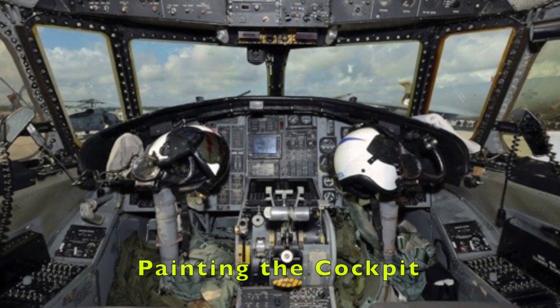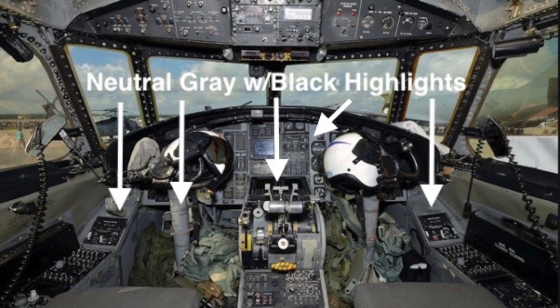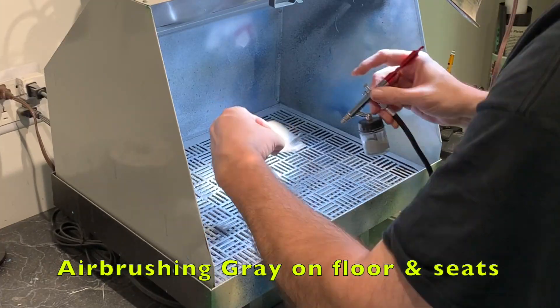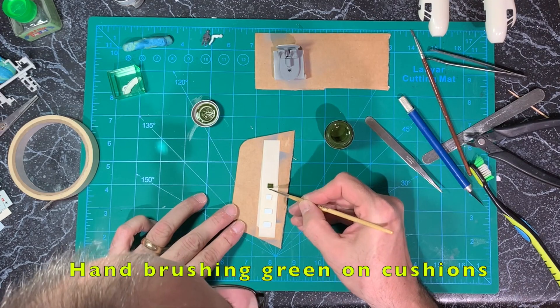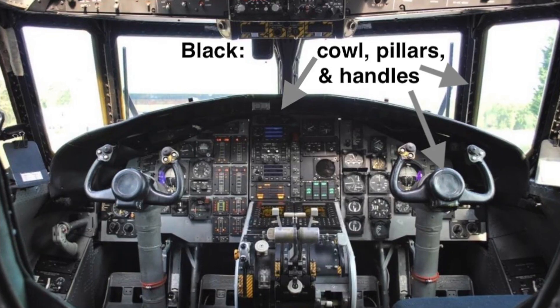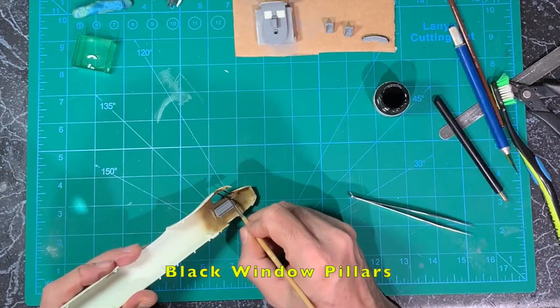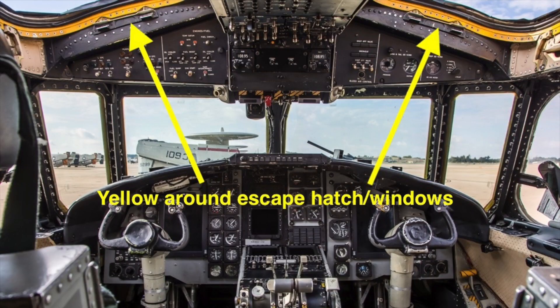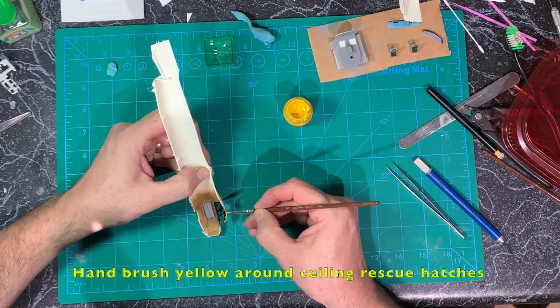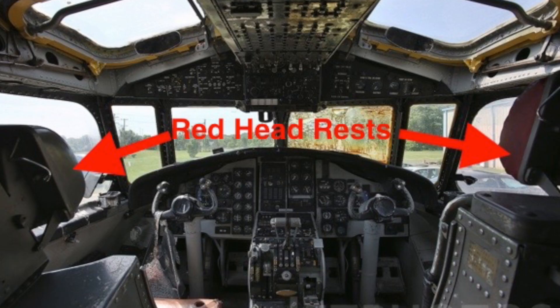It's time to paint the cockpit interior. The interior walls are flat dark earth. Side panels, steering columns, main panels, center console, and seat surrounds will all be neutral gray. I'm going with dark green for the seat cushions. Black will go on the cowl, windshield, pillars, and steering handles. Yellow around the edge of the rescue hatches. Finally, the headrests will be red.